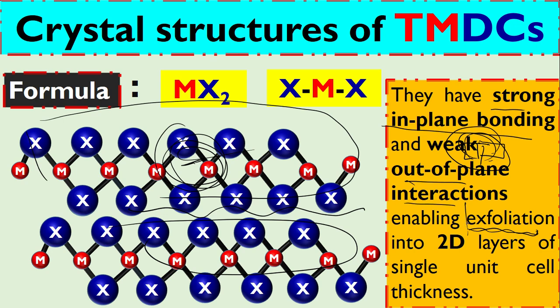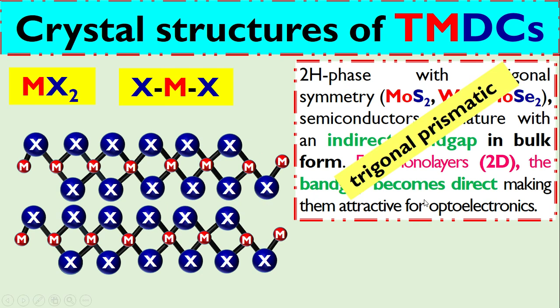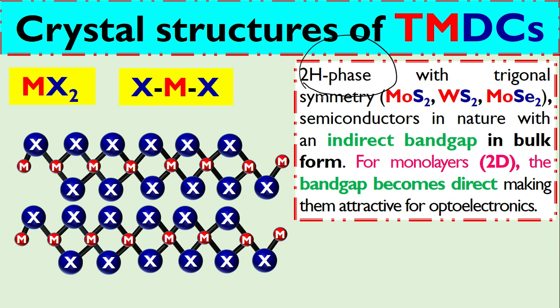This structure comes with two phases. One is called 2H-phase, such as MoS₂, WS₂, MoSe₂. This 2H-phase is a semiconductor in nature.